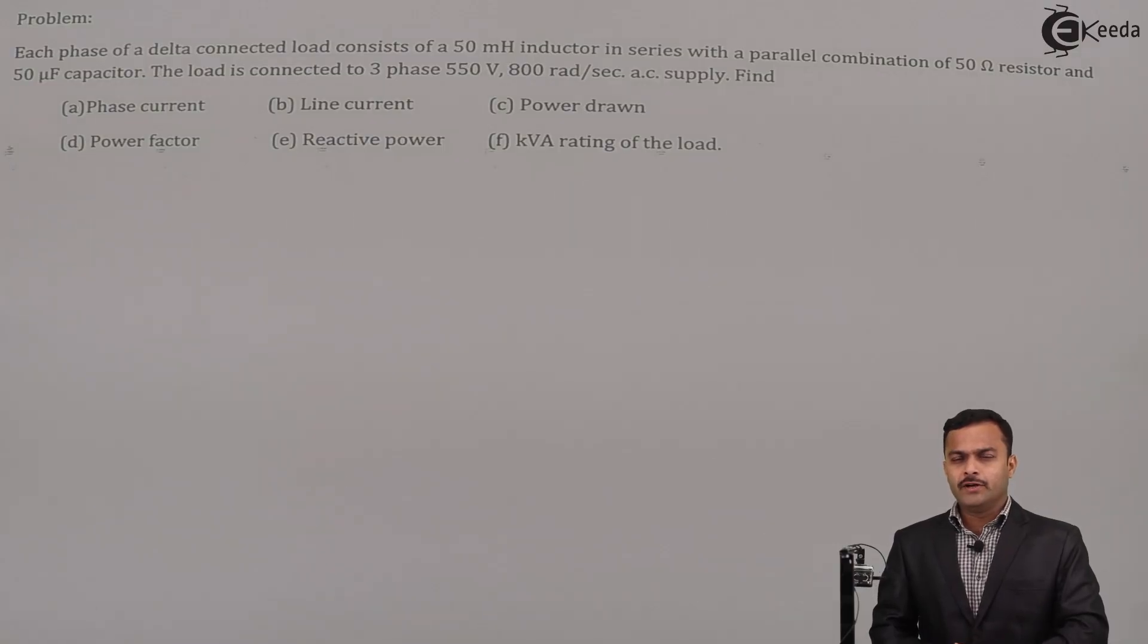Hi friends, in this video we are going to solve a problem based on three-phase circuit. Each phase of a delta connected load consists of a 50 millihenry inductor in series with a parallel combination of 50 ohm resistor and 50 microfarad capacitor. The load is connected to three-phase 550 volt, 800 radian per second AC supply. Find phase current, line current, power drawn, power factor, reactive power and kVA rating of the load.